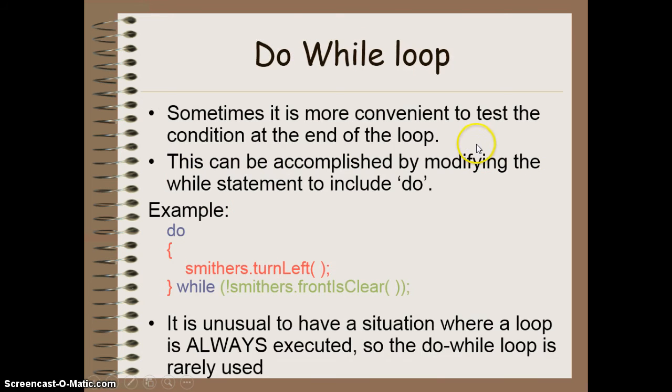And sometimes it's also more convenient to test your condition at the end of loop. This is what we use a do while loop for. So in this case, the contents or the body of the loop will be executed first before it is ever actually evaluated. So this means we're always going to do the code, then we check to see if we're going to do it a second, third, or fourth time. This is rather unusual to have in programming, so the do while loop is actually fairly rarely used, but it is an option for you if you wish to use it.